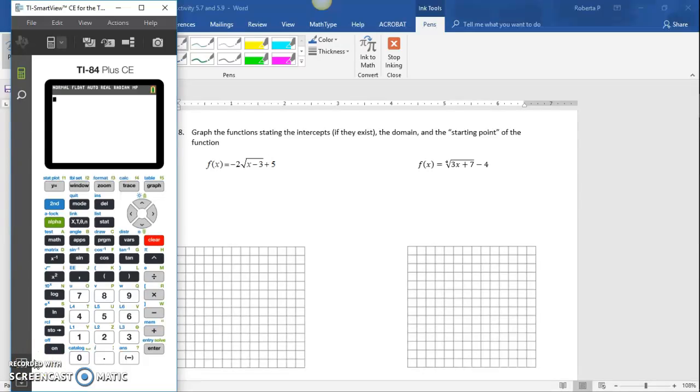On question 8, we want to graph f(x), the fourth root of 3x plus 7 minus 4.